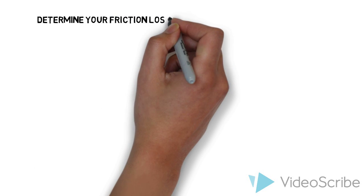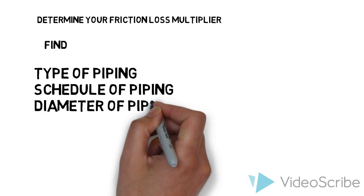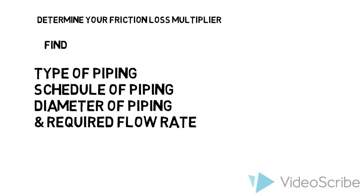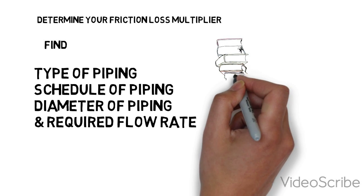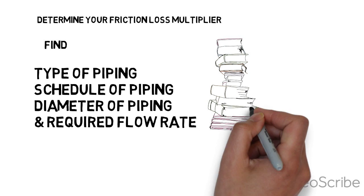Next, you need to determine your friction loss multiplier by using the following information: type of piping, schedule of piping, diameter of piping, and required flow rate. Once you have this, use a reference friction loss chart from your favorite manufacturer to determine the friction loss multiplier.